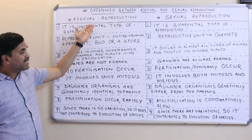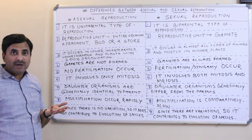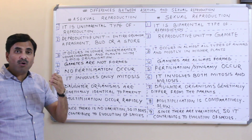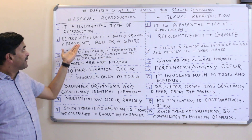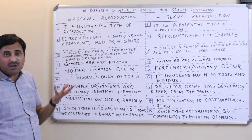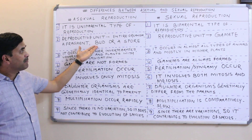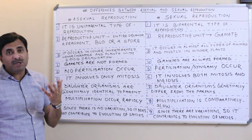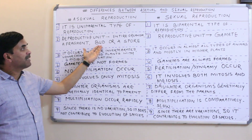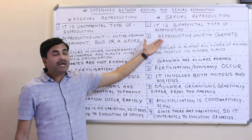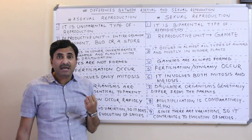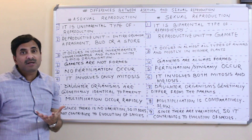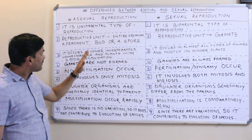Point number two: in asexual reproduction, what is the reproductive unit? The reproductive unit may be an entire organism, a fragment which is any part of the body, a bud, or a spore. But in sexual reproduction, the reproductive unit is a gamete — this is very important. Gametes participate in reproduction, so the reproductive unit is the gamete.